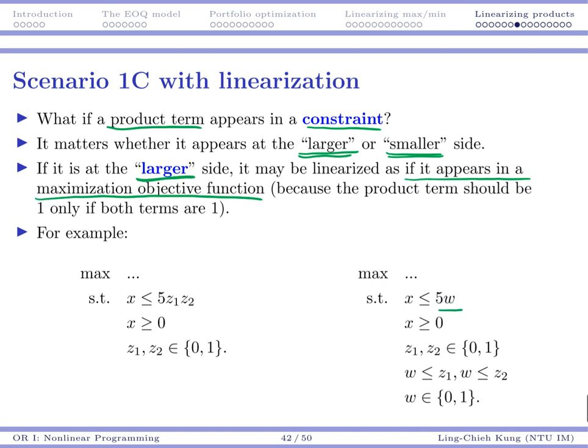So if your w appears at the larger side, then you need to give it upper bound. Otherwise, it will always be 1, and that's going to be the best case for you because that's going to enlarge your feasible region as much as possible. That does not make sense.